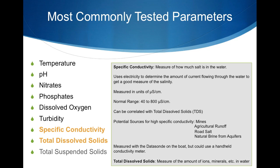Specific conductance is a measure of the amount of salts dissolved in water, measured as microsiemens per centimeter and ranges from 40 to 800 in southeast Ohio. Sources of increased specific conductance are agricultural runoff, road salts, and mining.